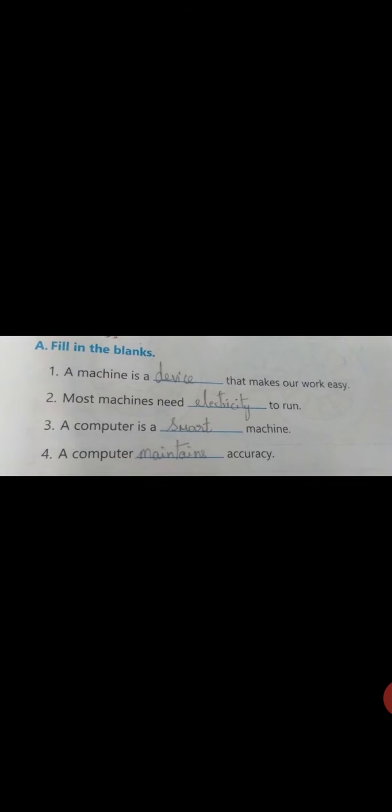A machine is a dash that makes our work easy. A machine is a device. Most machines need dash to run. Most machines need electricity to run. You have to learn the spelling of device, electricity, the answers. A computer is a smart machine. Of course. Next one, a computer maintains accuracy. Accuracy means very perfect.